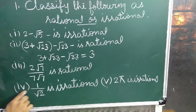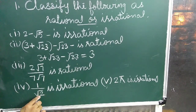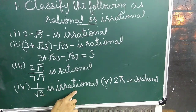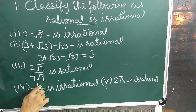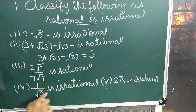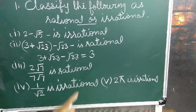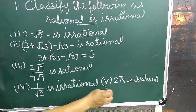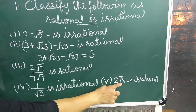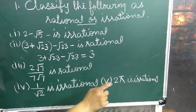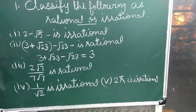Question number 4: 1 upon root 2 is irrational, because division of a rational number by an irrational number is an irrational number. Fifth question: 2 pi is irrational, because pi itself is an irrational number.